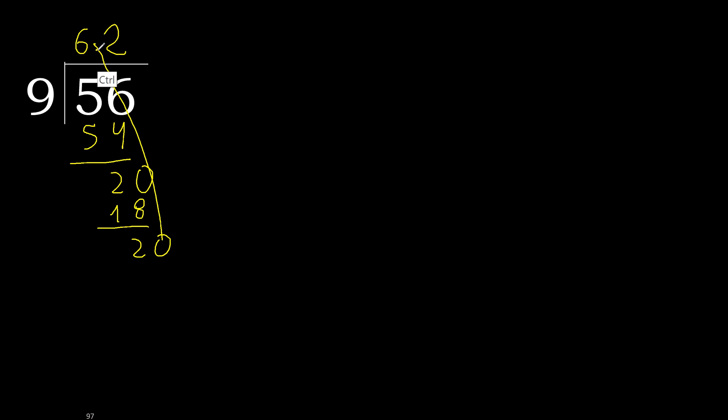Point is here. 29 multiply by 2 is 18. Subtract. Complete.